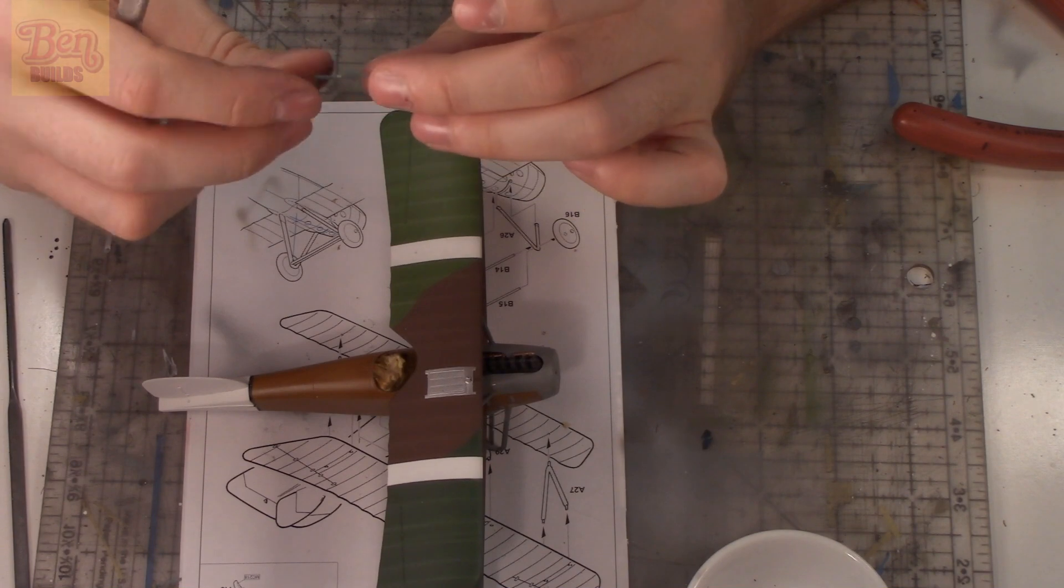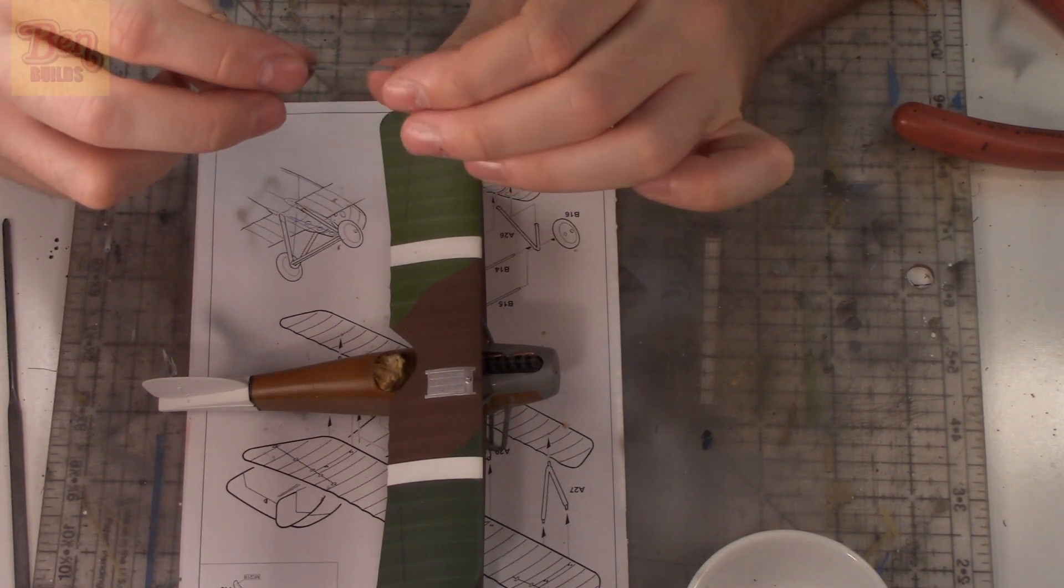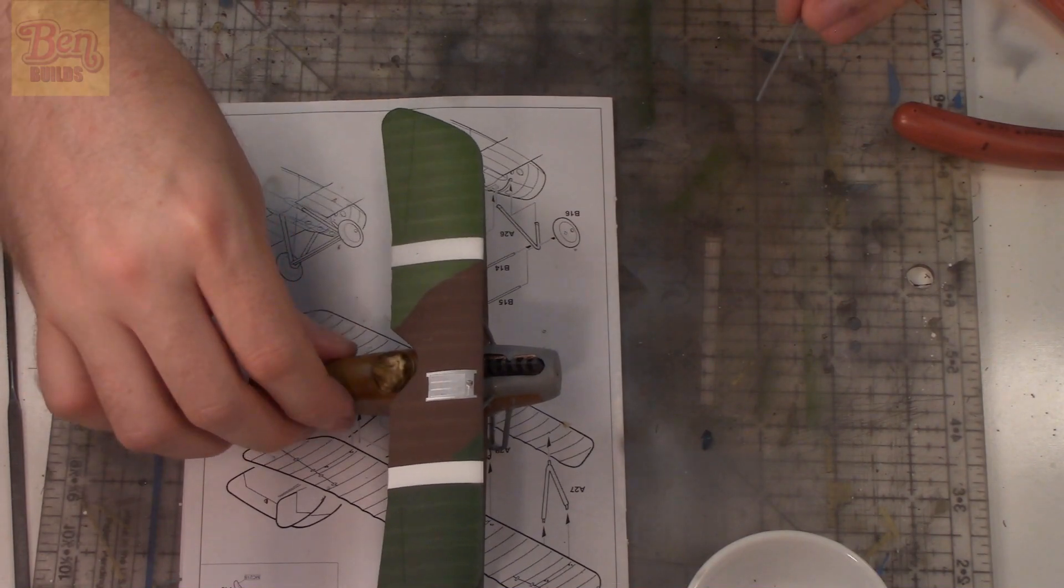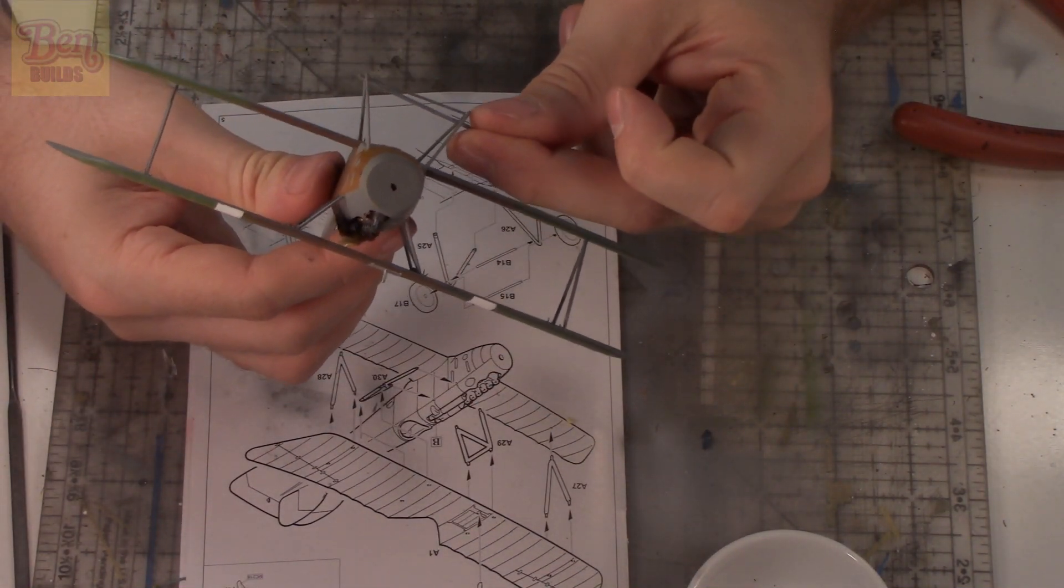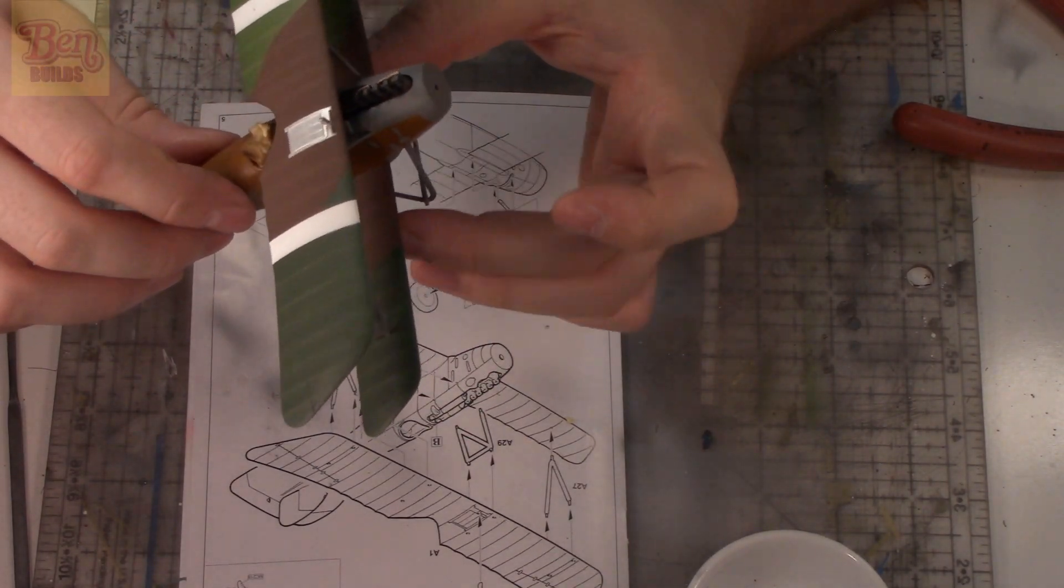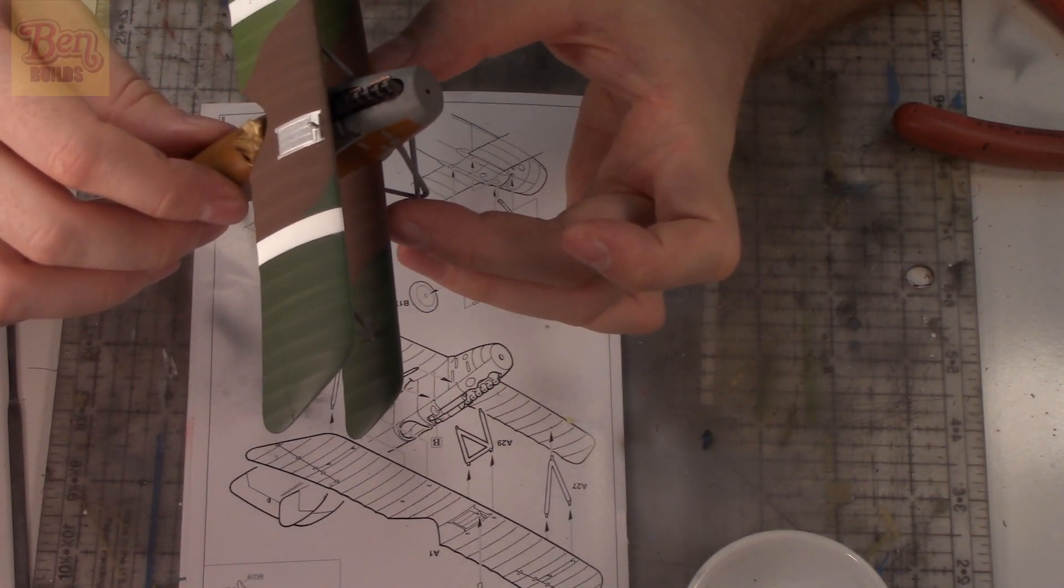Once that's dry, I'll position it where I think it should be, cut down the axle, then glue the other wheel on. We have to put it down from the top to the bottom and position it in the center of this curved part of the struts.